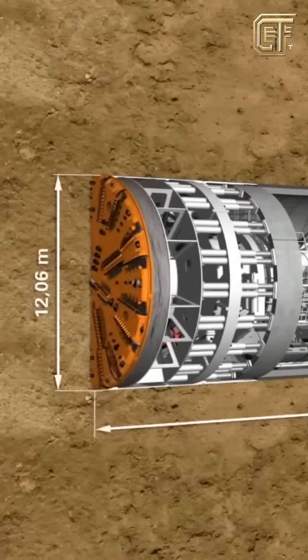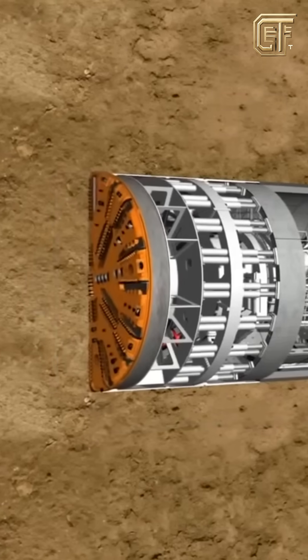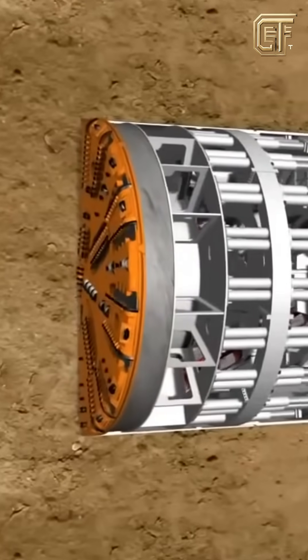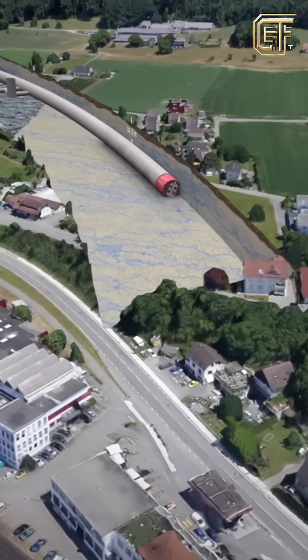A TBM typically has a width of 12 meters, weighs approximately 4,000 tons, operates at around 5,000 kilowatts, and can excavate an average of 20 meters of tunnel per day.